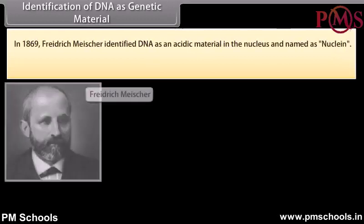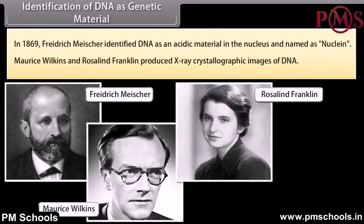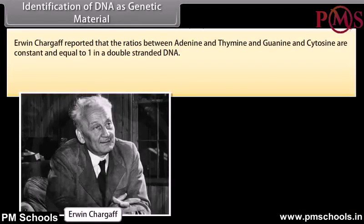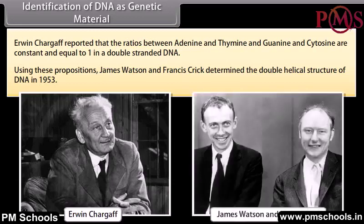Identification of DNA as genetic material. In 1869, Frederick Miescher identified DNA as an acidic material in the nucleus and named it nuclein. Morris Wilkins and Rosalind Franklin produced X-ray crystallographic images of DNA. Erwin Chargaff reported that the ratio between adenine and thymine, and guanine and cytosine, are constant and equal to 1 in a double-stranded DNA. Using these propositions, James Watson and Francis Crick determined the double helical structure of DNA in 1953.